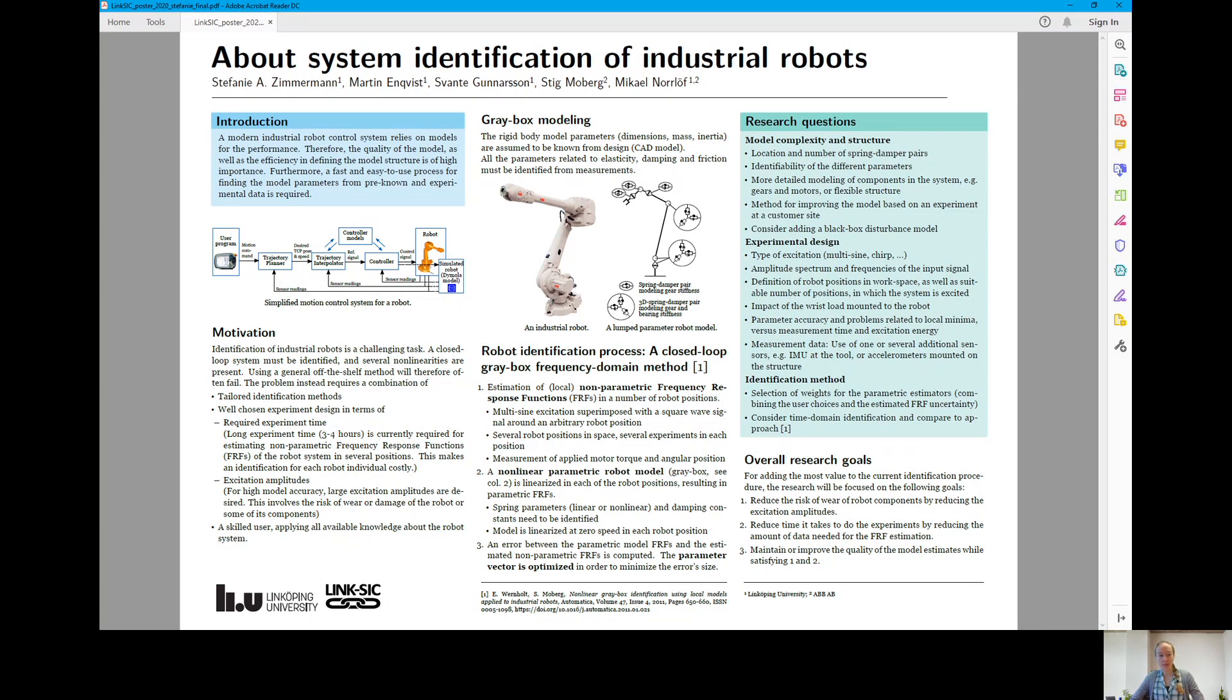Suitable in this context means that the model should be as simple as possible while closely matching the dynamic behavior of the real robot. In this research project we use system identification for finding the model parameters from a combination of pre-known data and experimentally gained data. The model structure will mostly be predefined but the efficiency of finding such a model is of high importance.